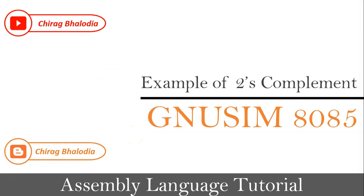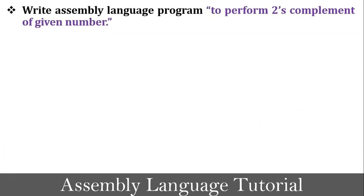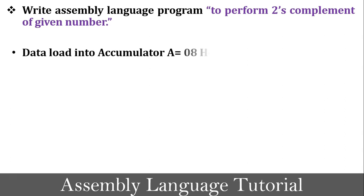The next topic is an example of 2's complement with programming concept. The program definition is: write an assembly language program to perform 2's complement of a given number. The first task is to load data into the accumulator — for example, 08 is loaded into the accumulator.